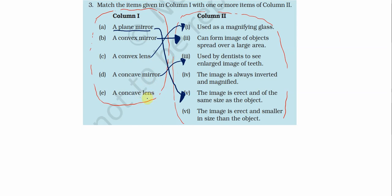For a concave lens, we are only left with options 4 and 6. The image is always inverted and magnified — this is not true for a concave lens. The image is erect and smaller in size than the object — this is true for a concave lens.